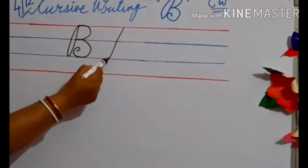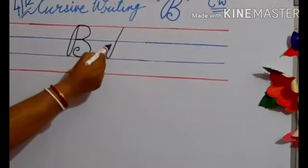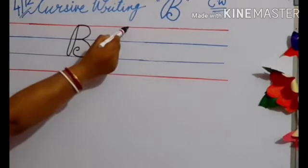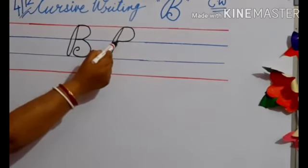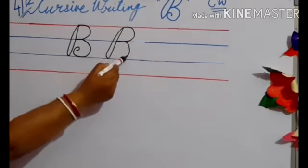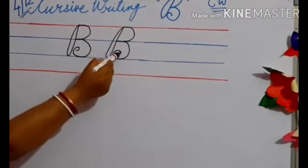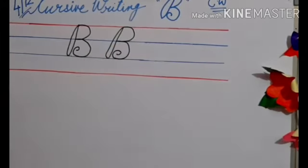Draw a slanting line starting from upper red line till second blue line and fold. Go till upper red line, then one half curve till first blue line, then second half curve till second blue line and again one fold.